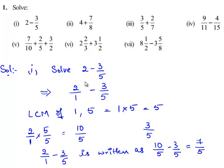Therefore, the solution for 2 minus 3 by 5 equals 7 by 5.